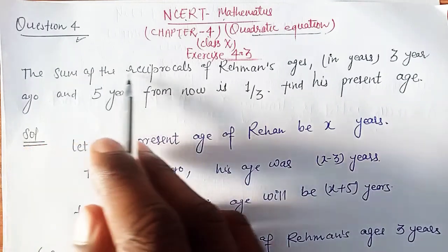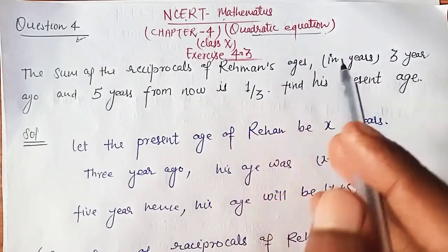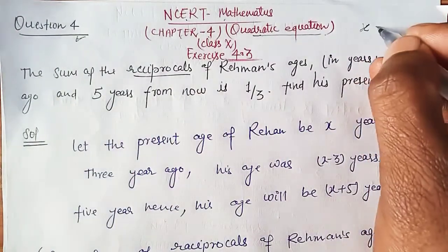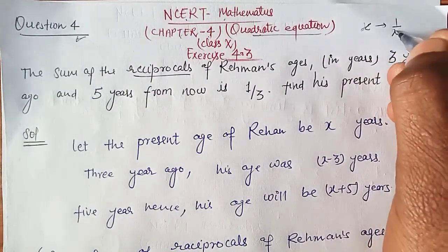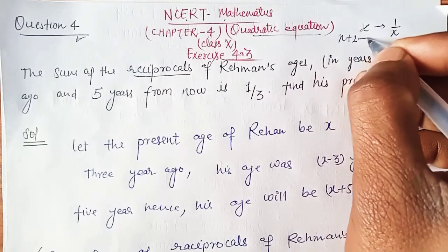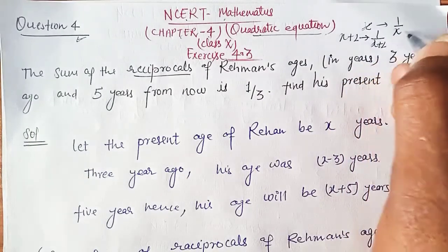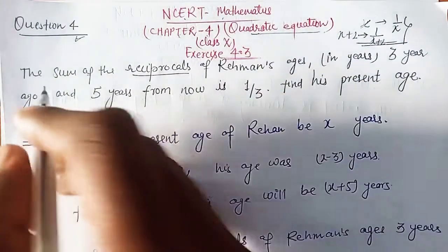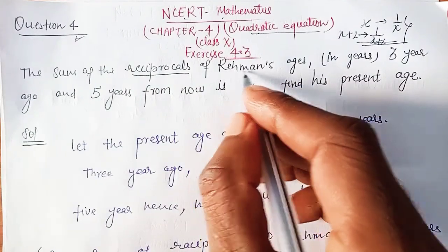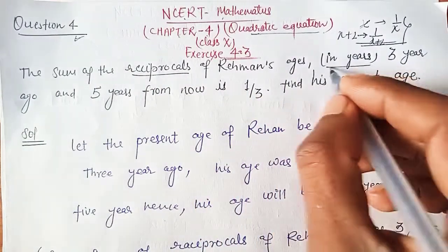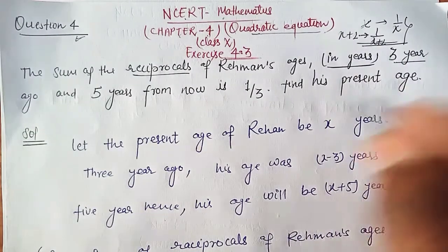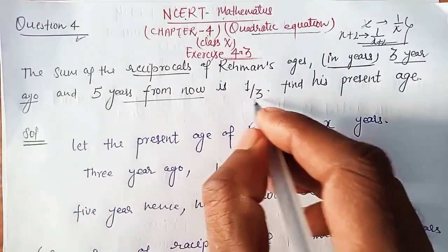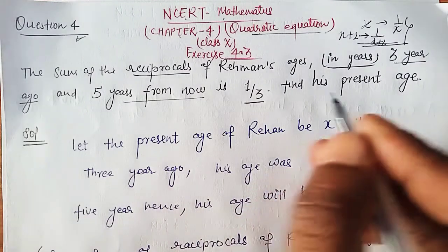The question: The sum of the reciprocals of Rehman's ages three years ago and five years from now is one upon three. Find his present age.